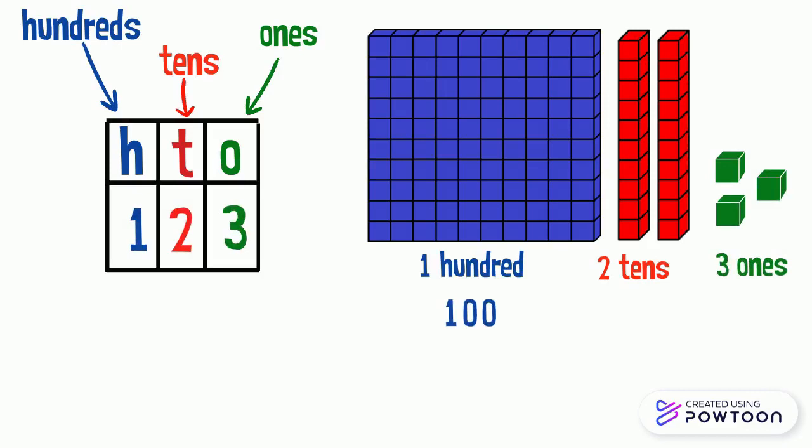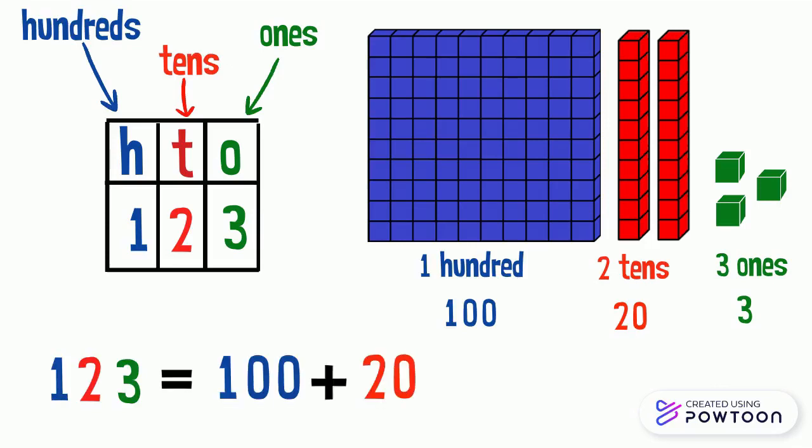One block of 100 equals 100. 2 tens equals 20. 3 ones equals 3. So the expanded form of the number 123 is 100 plus 20 plus 3.